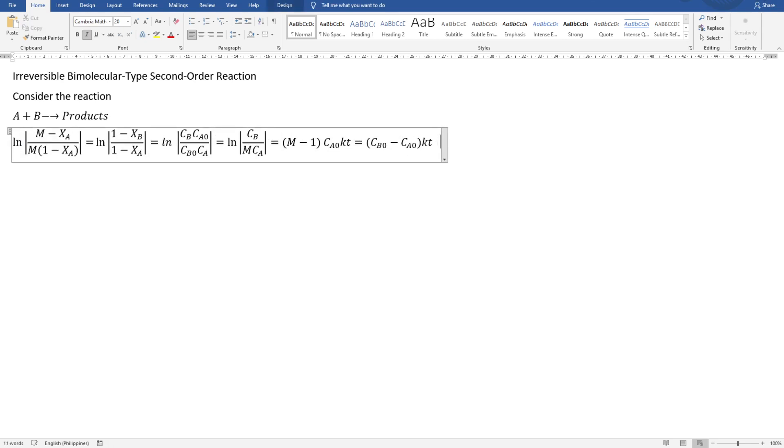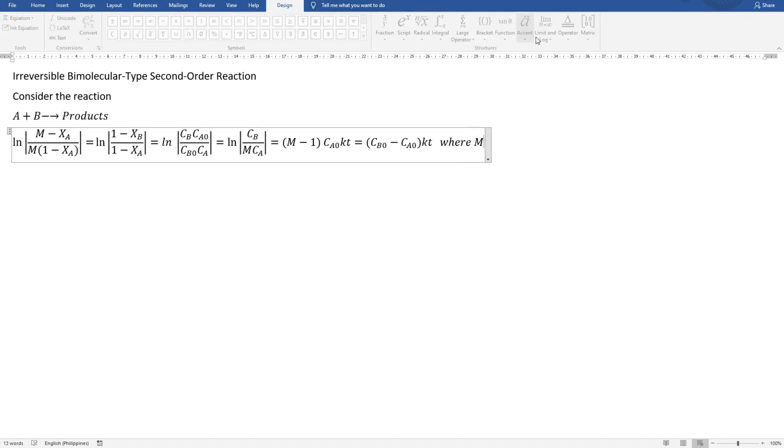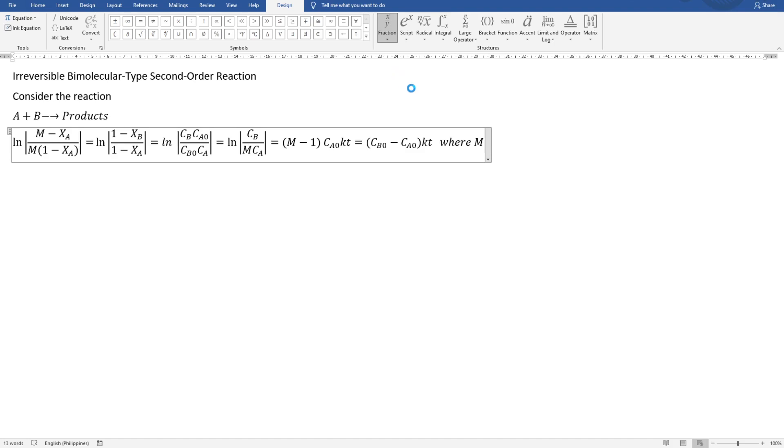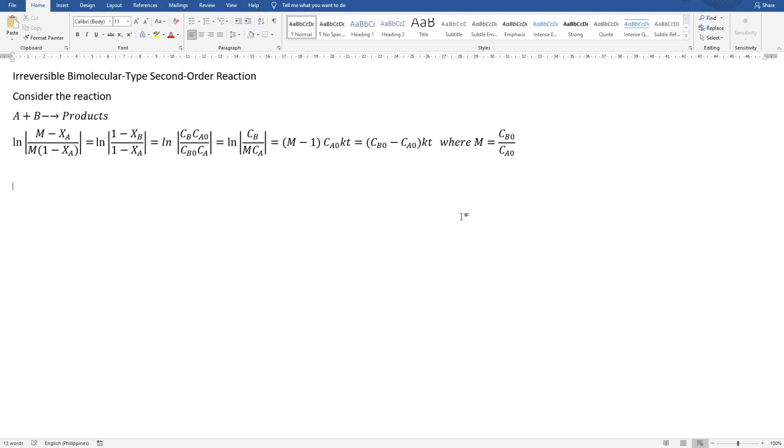where M equals this one. CBO over CAO, okay?